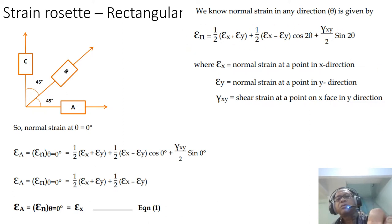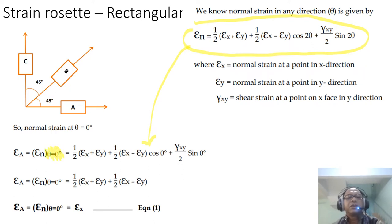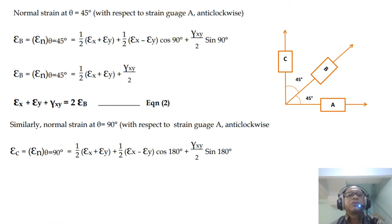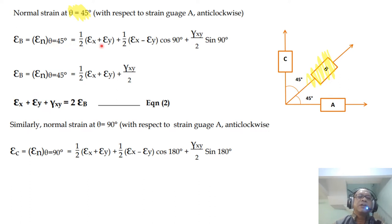You take the big equation, substitute theta equals 0, and you get epsilon x equals epsilon A. Now at theta equals 45 degrees for gauge B: 2 times 45 is 90 degrees, cos 90 = 0, sin 90 = 1. So the result is: 2 epsilon B equals epsilon x plus epsilon y plus gamma xy. That is equation 2.